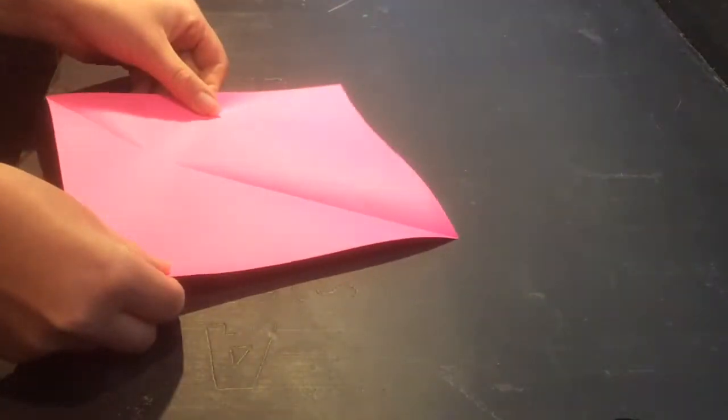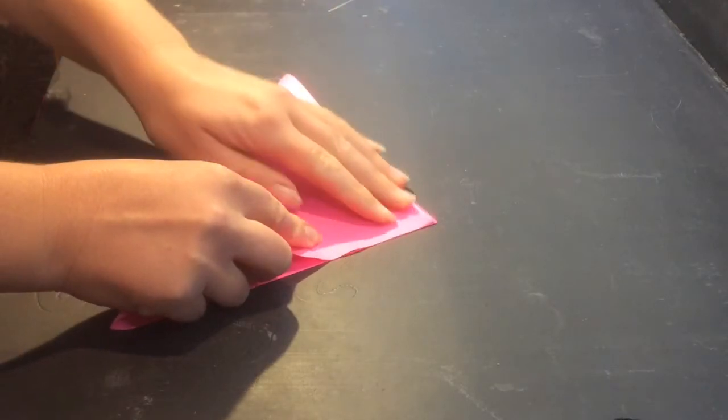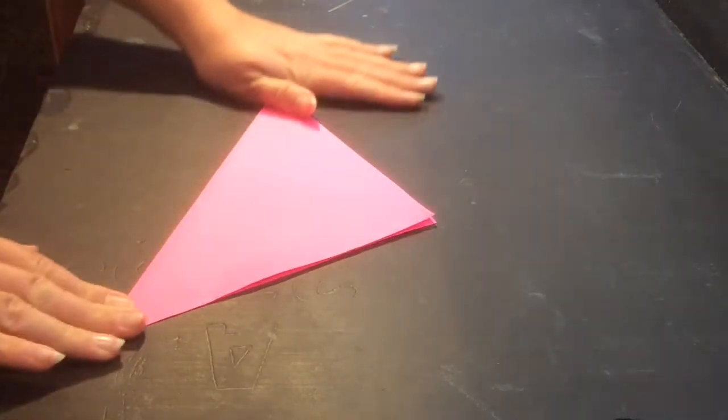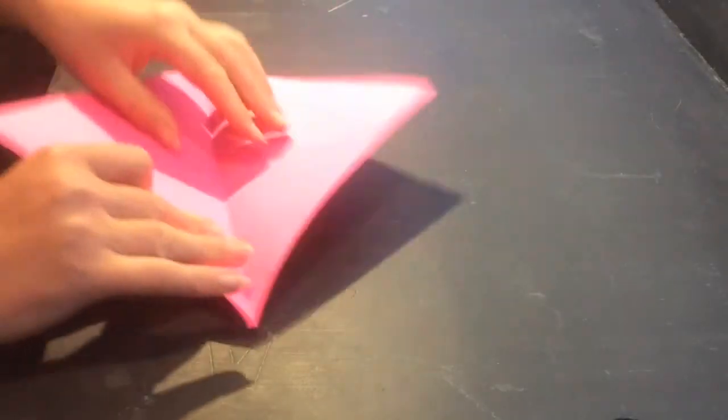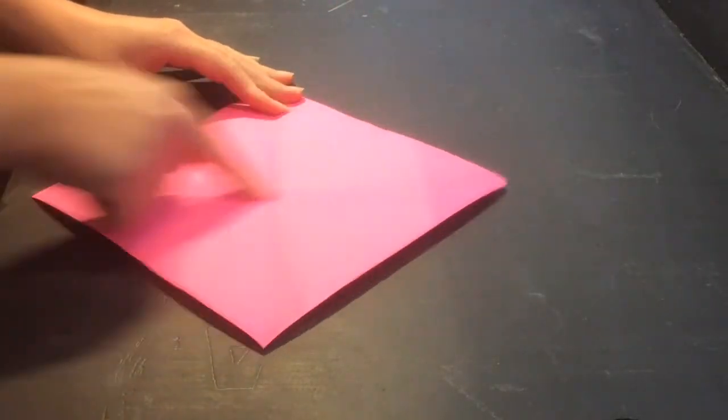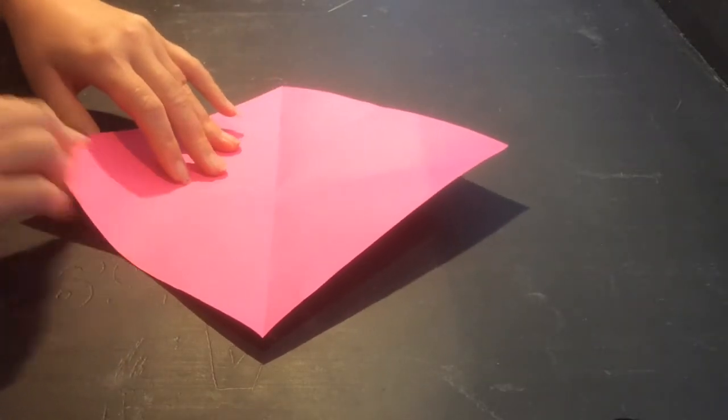So now we have our square with one line going all the way through. We're going to fold it over so that we've got a line going the other way as well. Press that crease down.